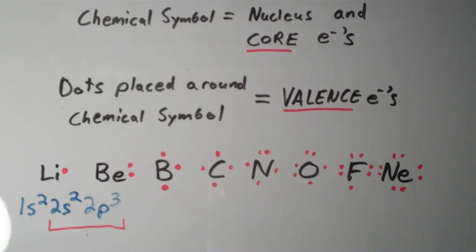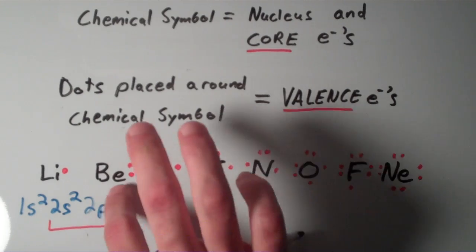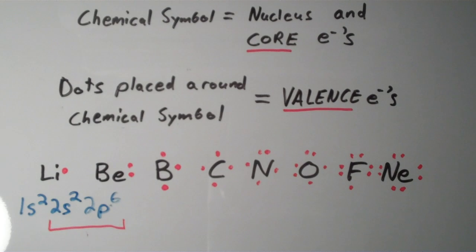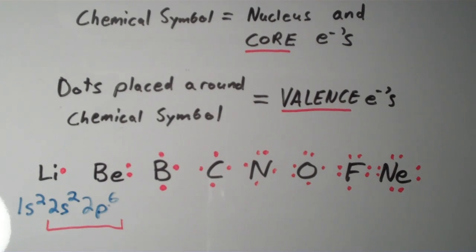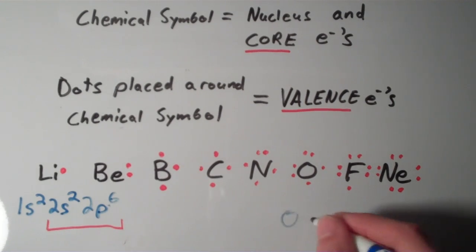Notice that for the neon atom we have a configuration of 1s², 2s², 2p⁶, and the valence shell has 8 electrons. And neon is a noble gas, and it also has what we call a noble gas electron configuration, which means that it has a full valence shell. If I wanted to put another electron on this thing, it would have to go into a 3s orbital, because the n equals 2 shell is now full of 8 electrons. And remember, the stability of that is what we call the noble gas electron configuration. And in this case, that noble gas electron configuration consists of 8 electrons, so we call that an octet.